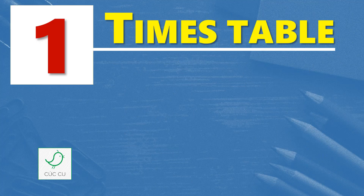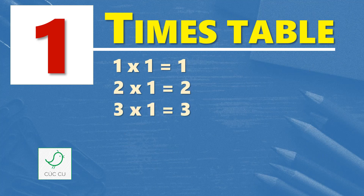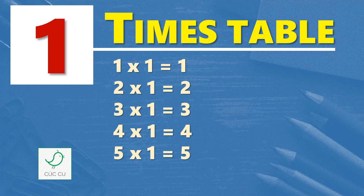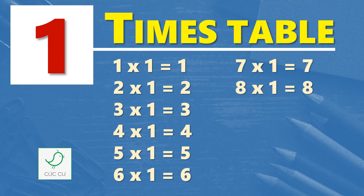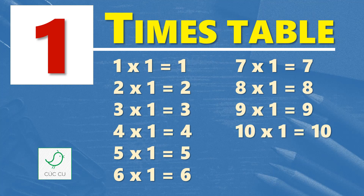Multiplication table of one. One times table. One times one is one, two times one is two, three times one is three, four times one is four, five times one is five, six times one is six, seven times one is seven, eight times one is eight, nine times one is nine, ten times one is ten, eleven times one is eleven.